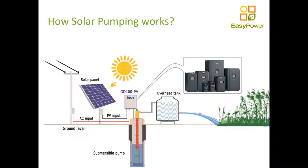The pump inverter is connected to a submersible pump in this diagram, but it could be a centrifugal surface pump, any kind of pump, or even a conveyor belt — anything that has an asynchronous motor and can run at variable speed. For a water pump, variable speed is acceptable, but for some applications you want a constant speed.